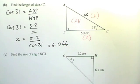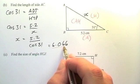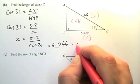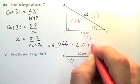So three figures, there's your one, two, three, but the fourth one is greater than 5, so you round up to 6.07 centimeters.